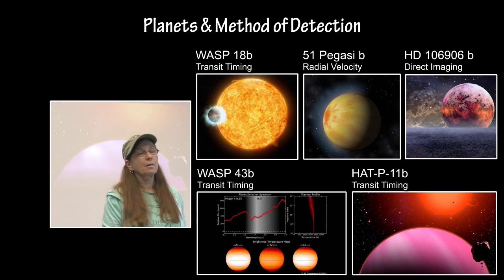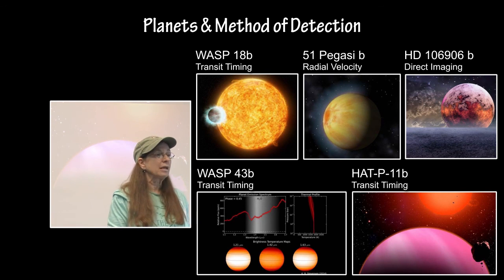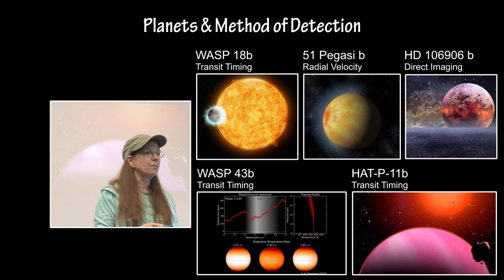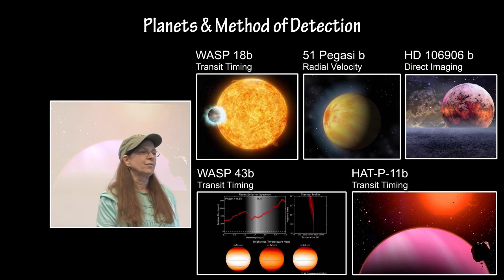So if you look at the planets that we have this year and the method of detection, three of them are transit timing, one of them is radial velocity, and one of them is direct imaging, which is the really weird planet that's very massive in such a long way from its parent star.